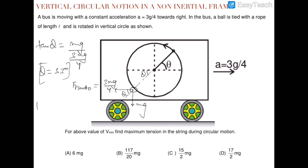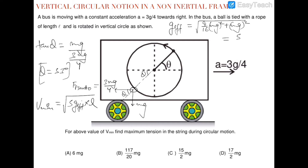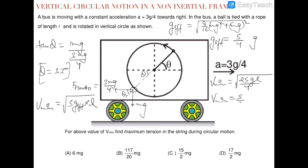The minimum velocity v_minimum equals the square root of 5 × g_effective × l. The g_effective equals the square root of (9/16)mg² + mg², which gives 5/4 × g. So v_minimum equals the square root of 25gl/4, which simplifies to (5/2)√(gl).